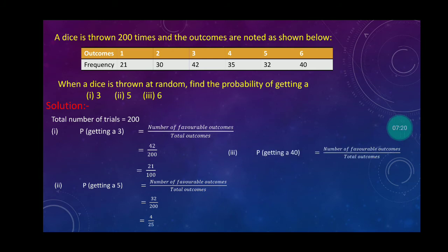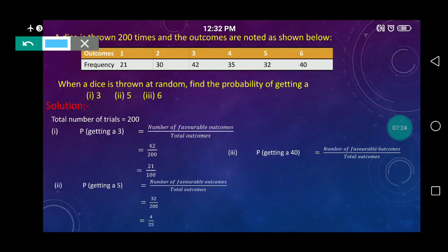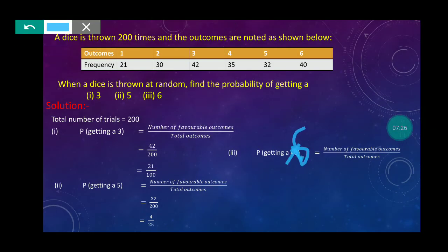Third point. Third point is P(getting 6). By mistake it was written as 40, but it should be P(getting 6). Check, 6 came 40 times. So we write 40 upon 200. Simplifying: 10 upon 5. Again simplifying: 1 upon 5. This is your answer.